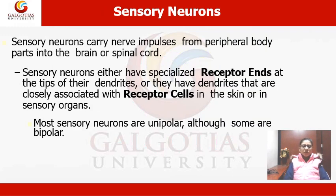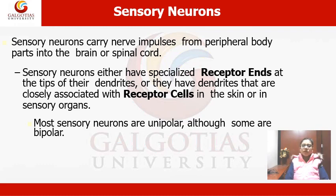Sensory neurons carry nerve impulses from peripheral body parts into the brain or spinal cord. Sensory neurons either have specialized receptor ends at the tip of their dendrites, or they have dendrites closely associated with receptor cells in the skin or sensory organs. Most sensory neurons are unipolar, although some are bipolar.